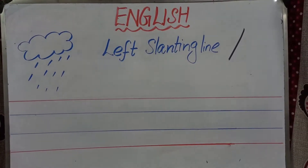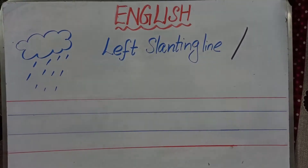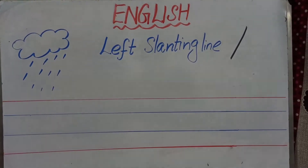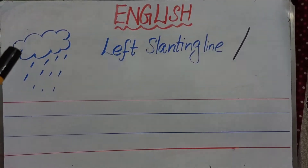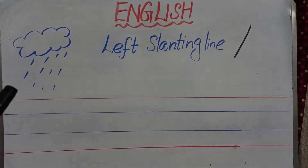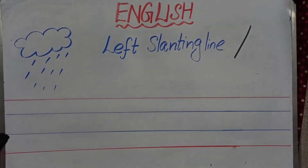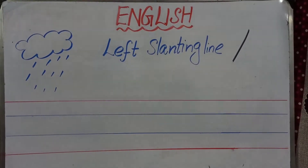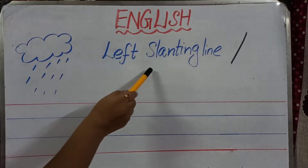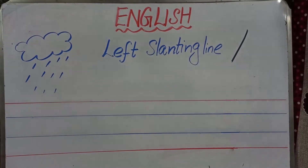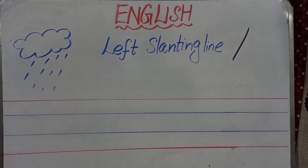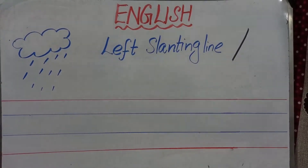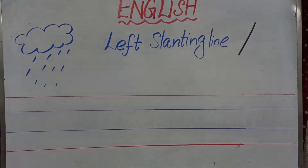Now how are we going to write the left slanting line? We are going to start from the right side, come down, and we are going to stop at the left side. So this is called left slanting line, as we are starting from the right and finishing at the left side.